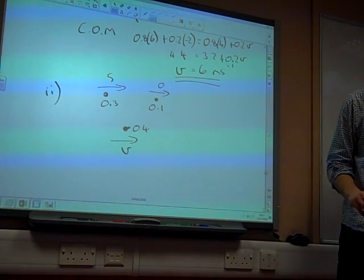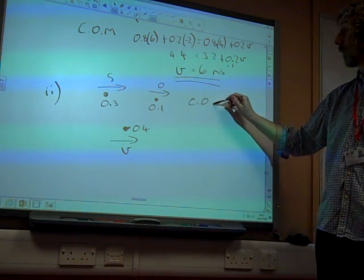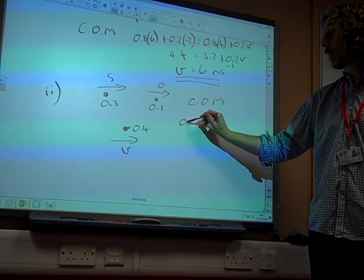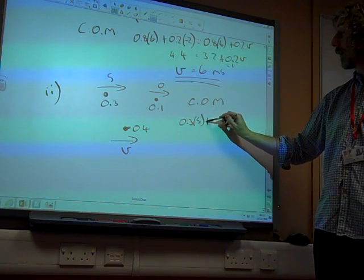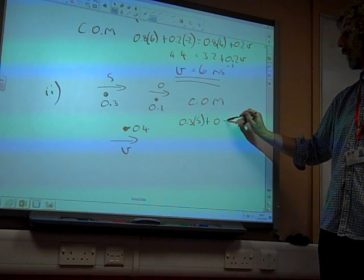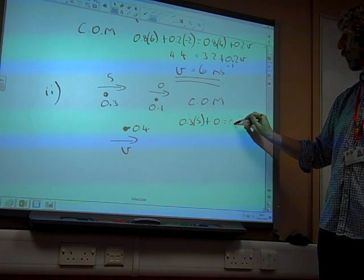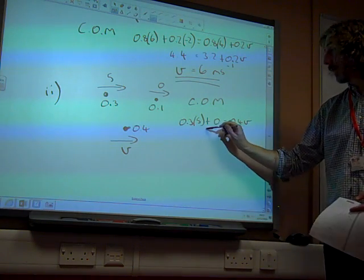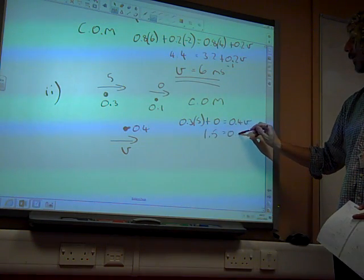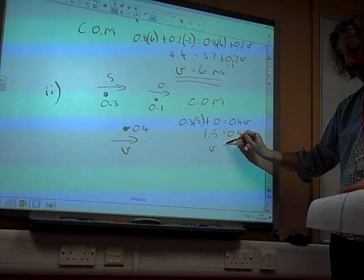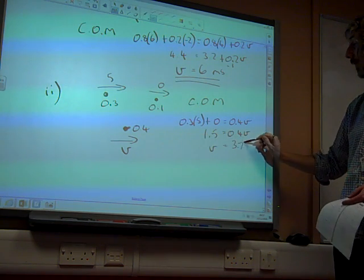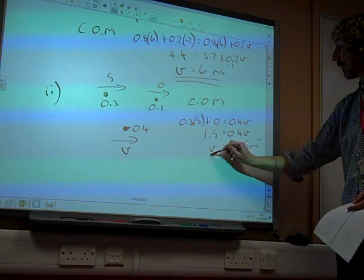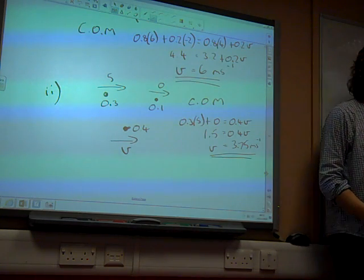Pretty much the same calculation, conservation of momentum. We've got 0.3 times 5 plus 0 is equal to 0.4 times V, which gives us 1.5 is 0.4V. So this time, the velocity afterwards is 3.75 meters per second.